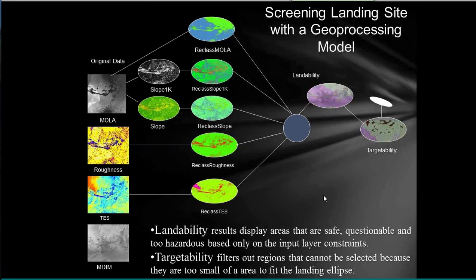GIS is meant for overlay analysis, whether it's polygons or rasters. For example, with JPL landing site analysis, I had tests for dust, roughness from slope, and topography — needing to land under a certain elevation. These all go into what's called a model. You load these datasets, hit play, and end up with what I call a targetability map. It's fairly easy to set up, and ArcMap has a drag-and-drop interface for this kind of workflow.